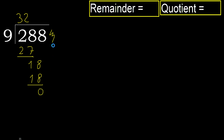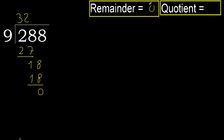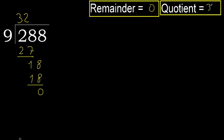There is no next number, therefore we finish. 288 divided by 9 is 32.